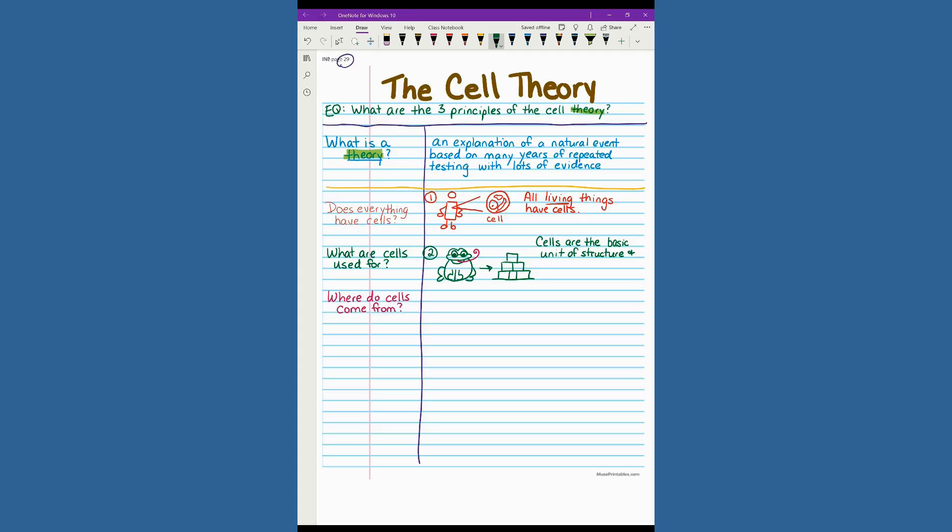And we've got the tongue of the frog sticking out because that's doing something. It's going to be catching food in this case. So cells are also the basic unit of function. Living organisms can't do stuff without their cells. So we could also say that cells are the smallest unit of life, just like we saw in our levels of organization. So what are cells used for? Cells are used to build organisms and to help organisms function correctly.